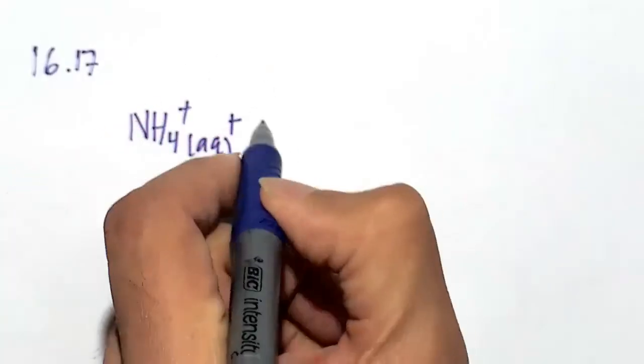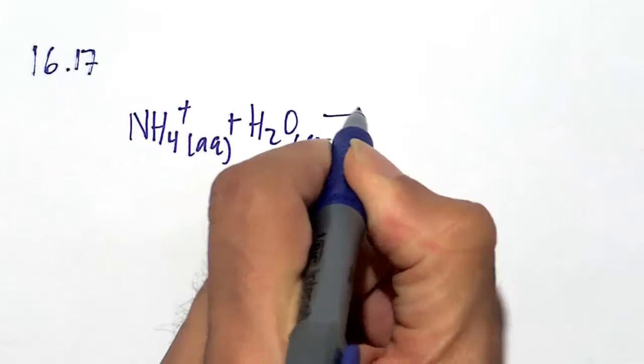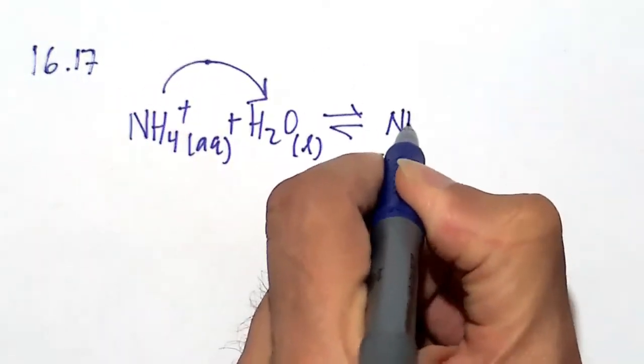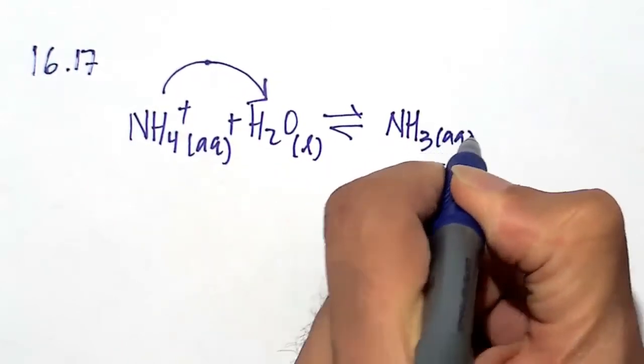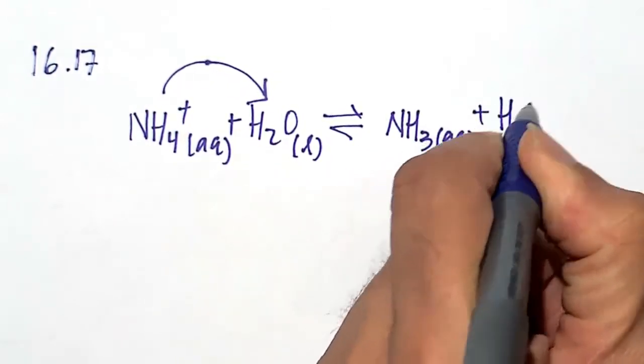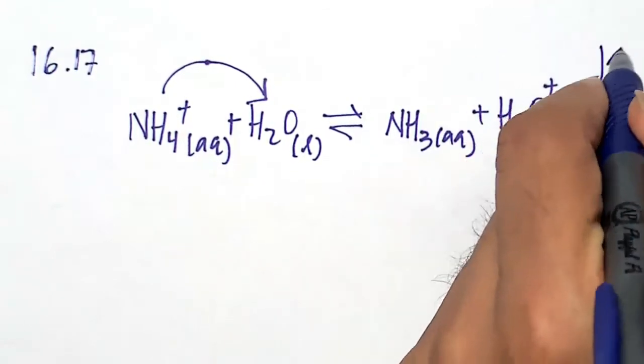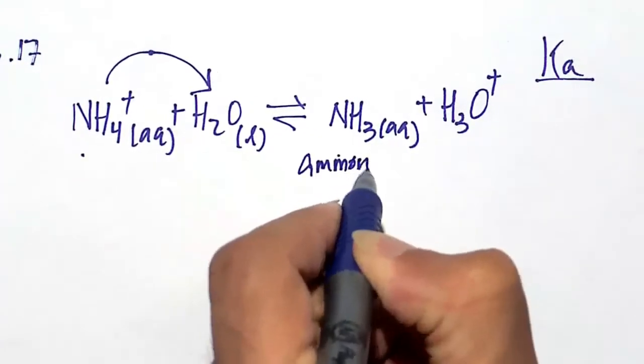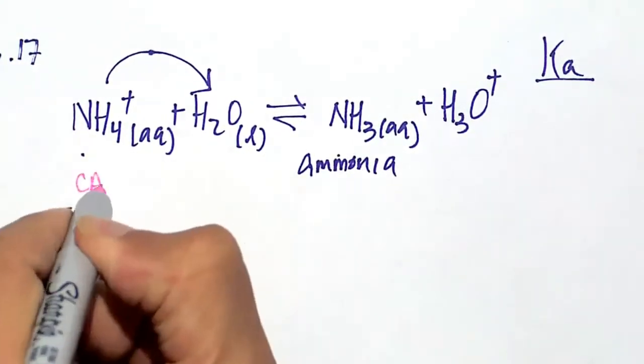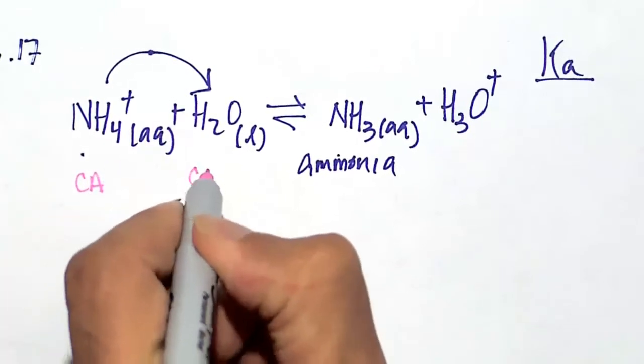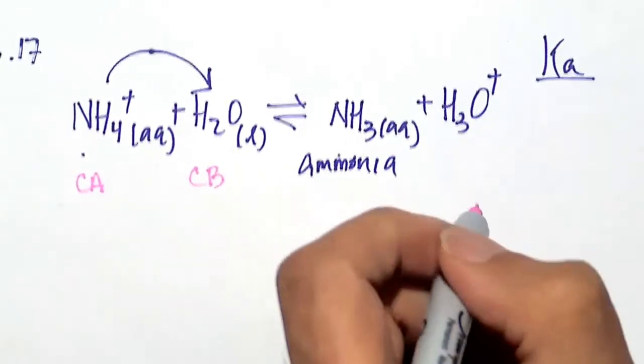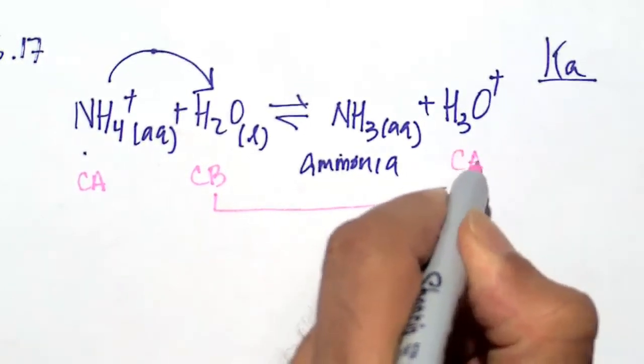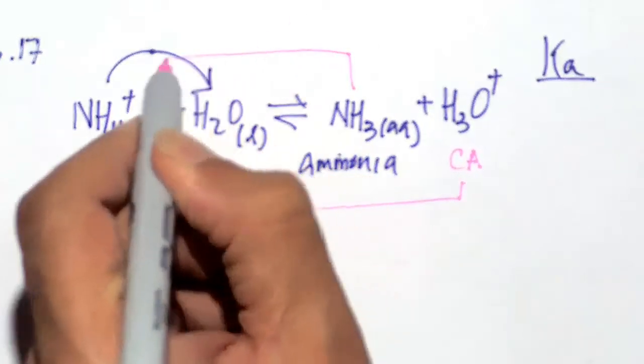The first thing we will do to approach this problem is write the Ka for this reaction. The NH4+, ammonium ion, will donate a proton to water and becomes ammonia, its conjugate base. We get H3O+, which is the same thing as a proton or hydronium ion. This is called ammonia, and NH4+ is the ammonium ion. The conjugate acid is the ammonium ion, the conjugate base is ammonia. The conjugate base of water is the conjugate acid is the proton H3O+.